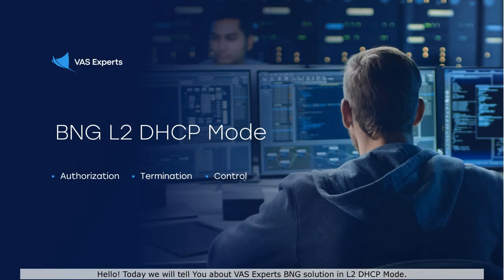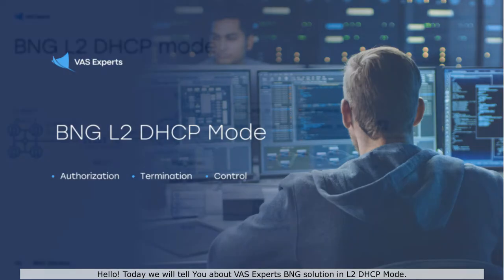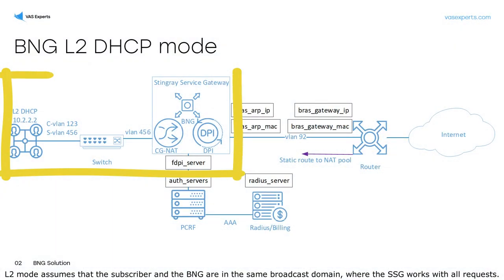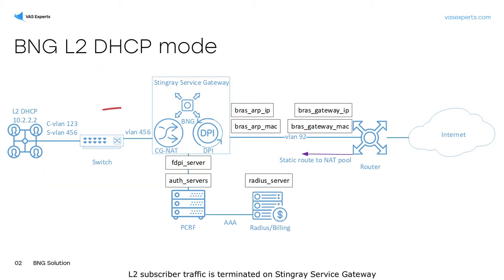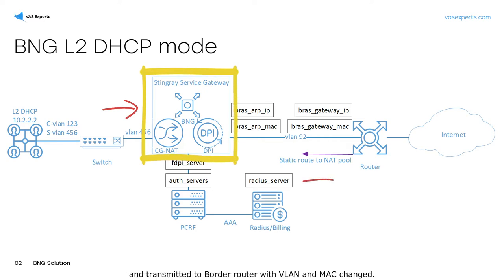Hello. Today we will tell you about VASExpert's BNG solution in L2 DHCP mode. L2 mode assumes that the subscriber and the BNG are in the same broadcast domain, where the SSG works with all requests. L2 subscriber traffic is terminated on Stingray Service Gateway and transmitted to Border Router with VLAN and MAC changed.